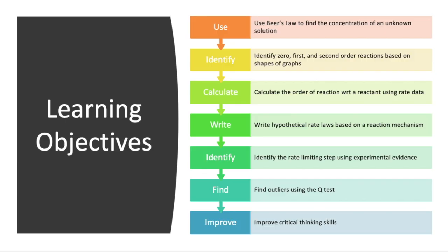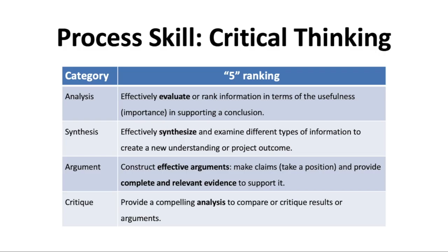Our process skill for today is going to be critical thinking. The whole goal of this experiment is to be able to make a claim about which step is rate-limiting and provide evidence and analysis to support that claim. You need to look at all the different information you have, evaluate it, decide what's relevant for your argument, and then put together the different methods for finding the orders of reaction to build the rate law.